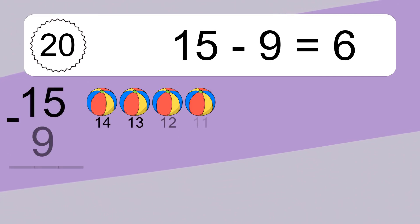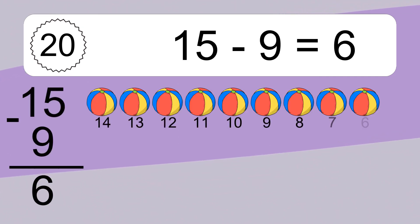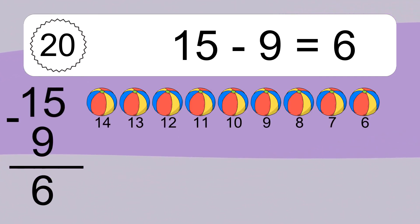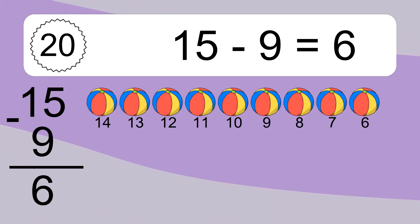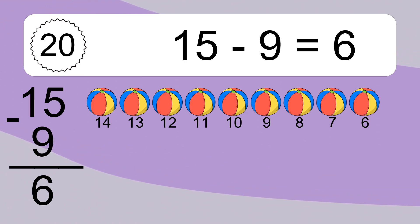Fifteen minus nine equals six. Let's count it: fourteen, thirteen, twelve, eleven, ten, nine, eight, seven, six.